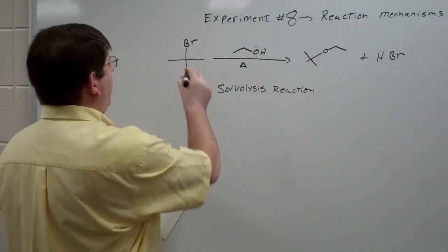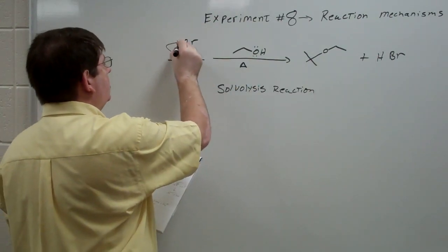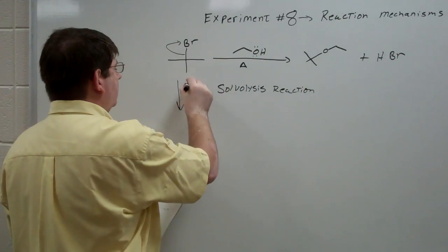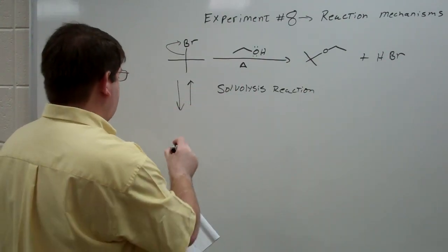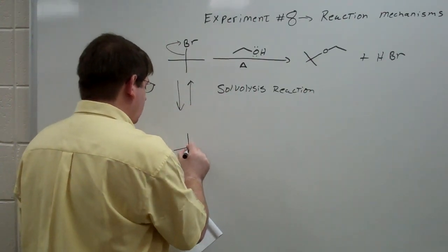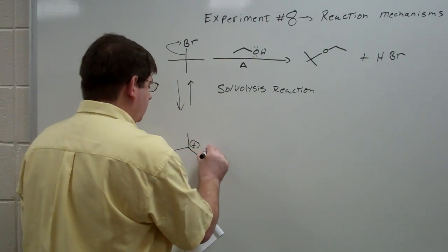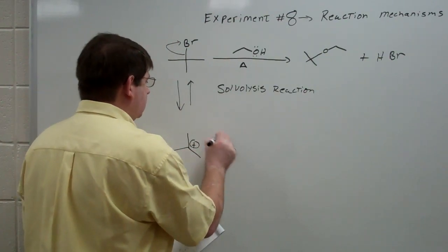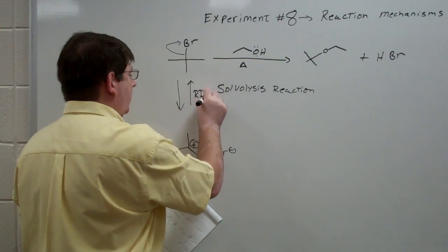Because, as we know, the SN1 reaction involves, in the slow step, the breaking of a carbon bromine bond, in this case, to give us the cation plus bromide. So this is what occurs in the rate determining step.